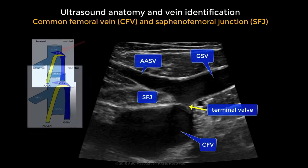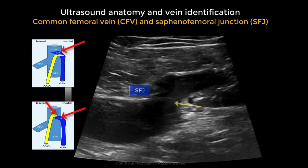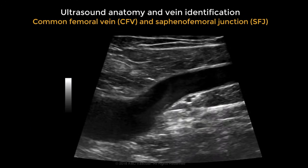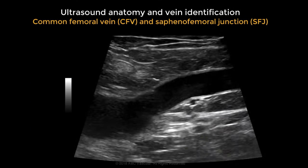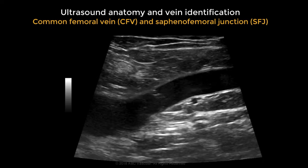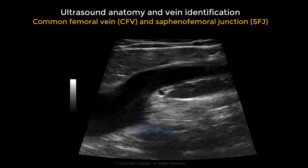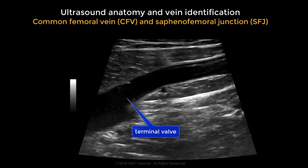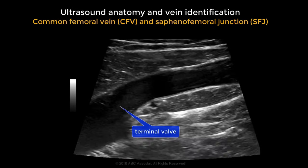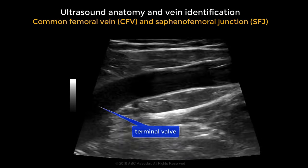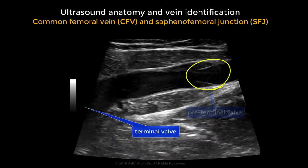These two veins can share a common origin or they can have a separate one. If we focus on the great saphenous vein, we can see the terminal valve here, and by moving the transducer in longitudinal view further down we can identify another valve — the preterminal valve.